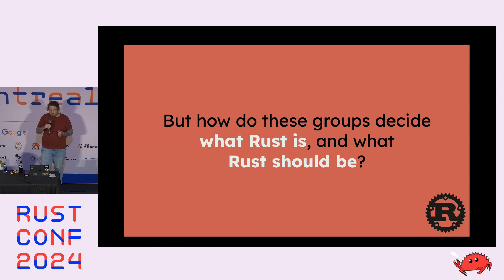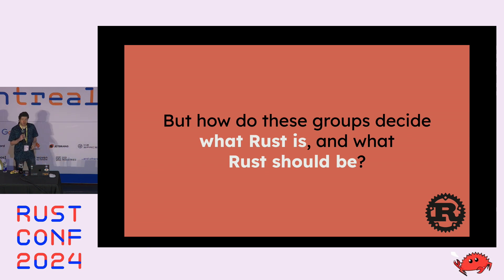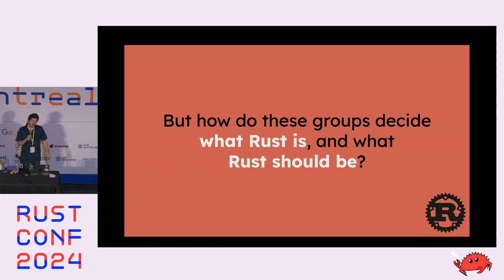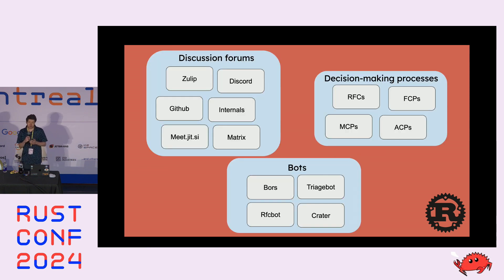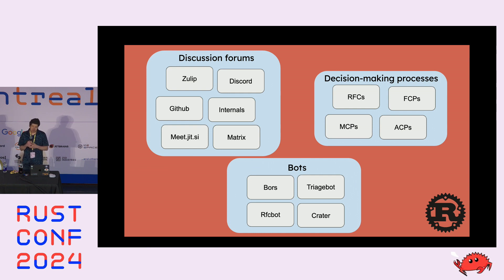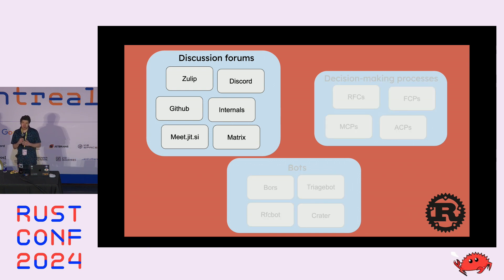With hundreds of people, how do these groups decide what Rust is today and what it should be in the future? There's a lot that goes into these questions. Rather than focusing on how individual teams decide what they do, I want to focus on three high-level ideas: first, how the project communicates with each other; second, the processes we use to make decisions; and finally, some of the bots we use to keep things running smoothly.